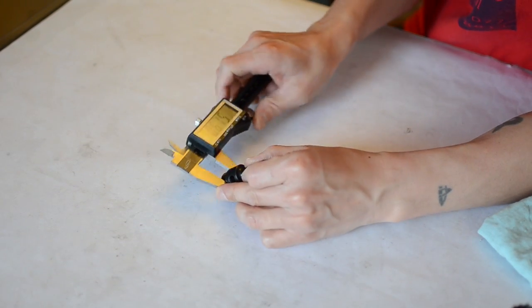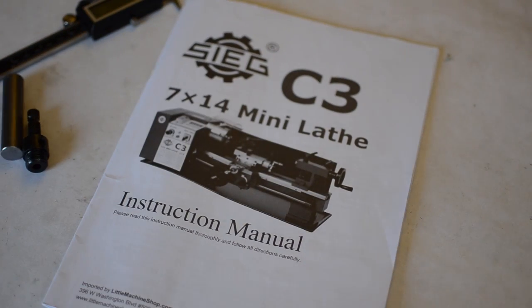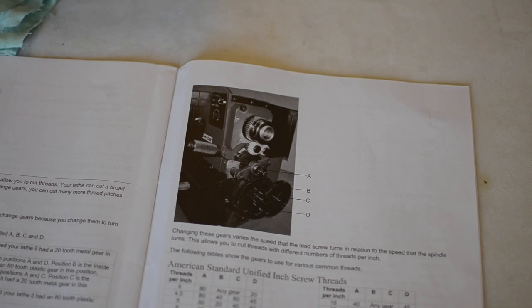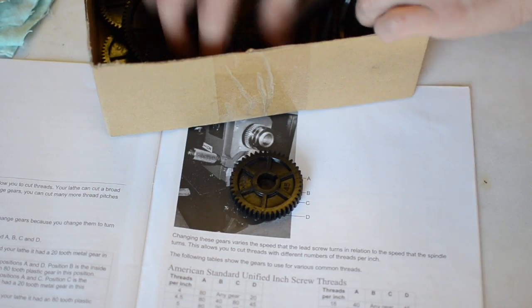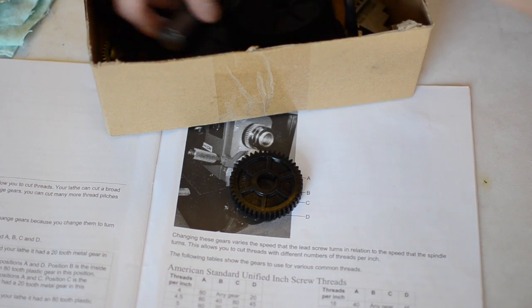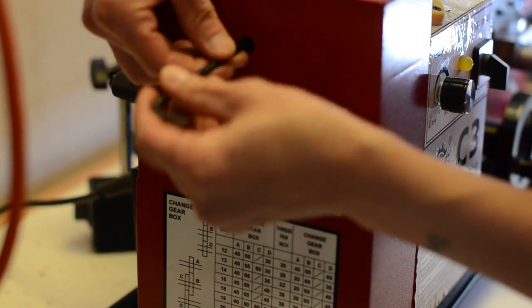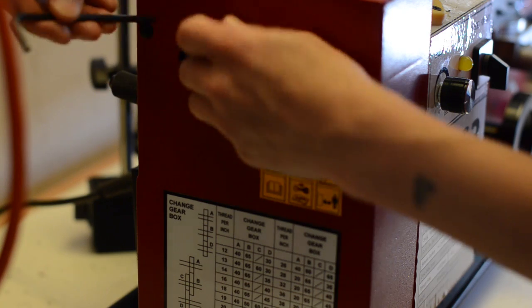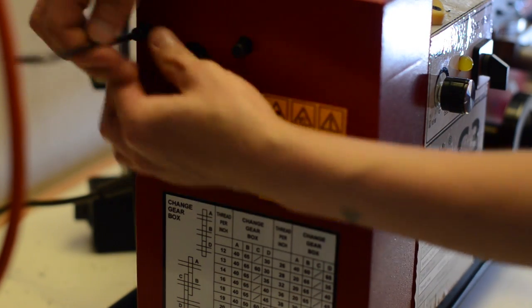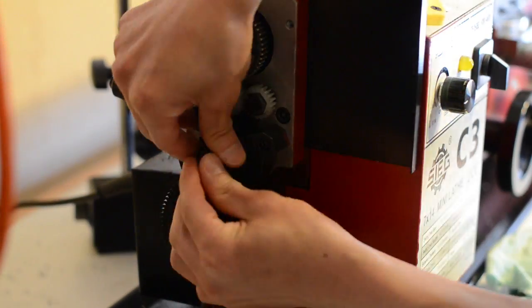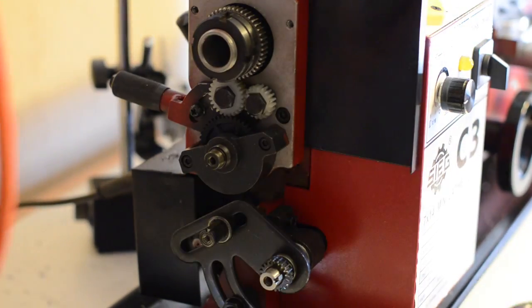This is a manual to the mini lathe and it actually explains how to do this. It's pretty well written. You can see here there's a picture of the gearbox. You've got to change the gears to the right ratio you need to do for threading. I won't get into all the how-to-thread because there's a lot of videos on how to do that, but I did leave this process of me changing the gears so you guys can kind of see an overview of what's involved.